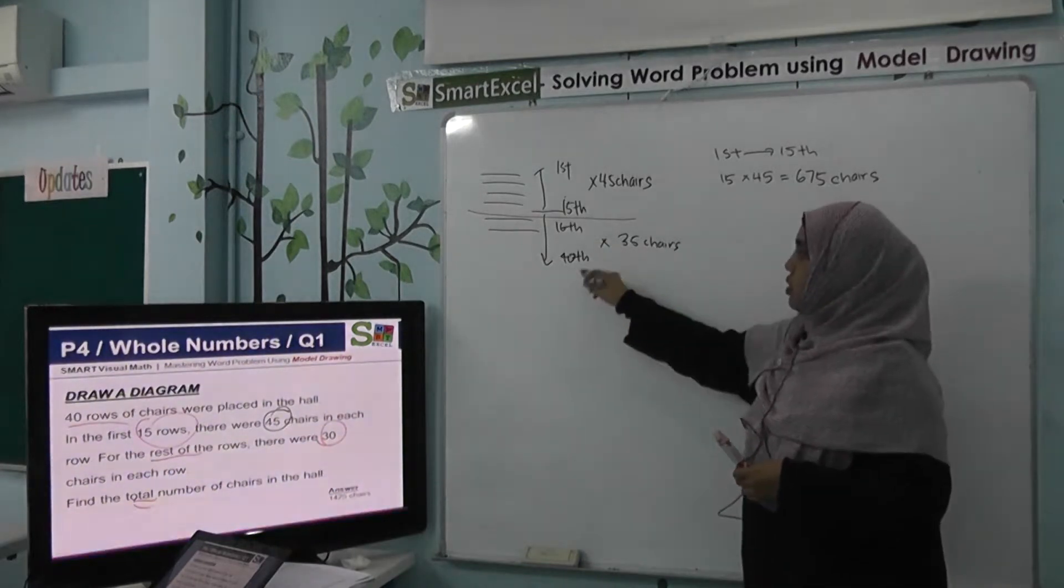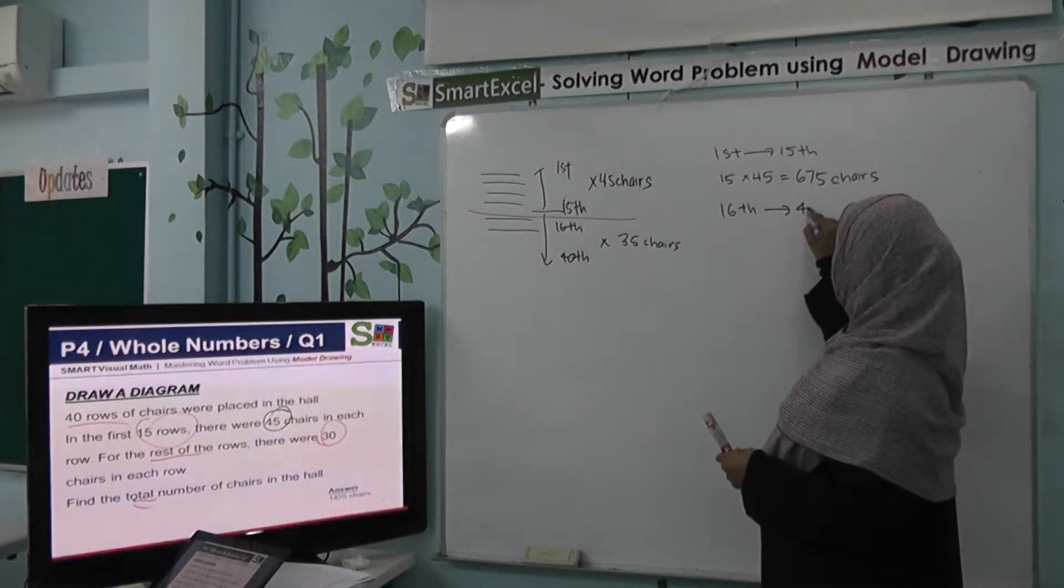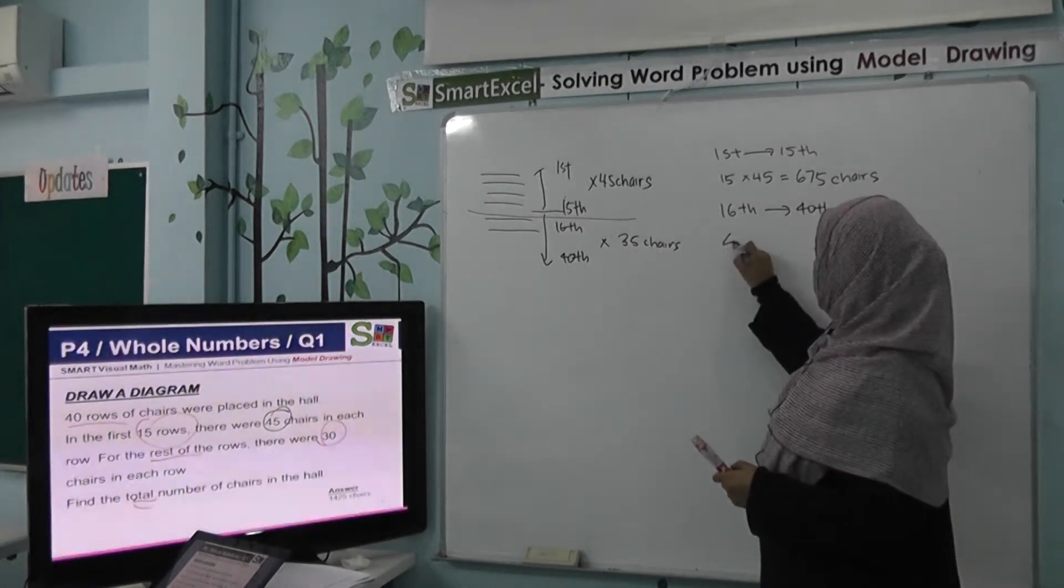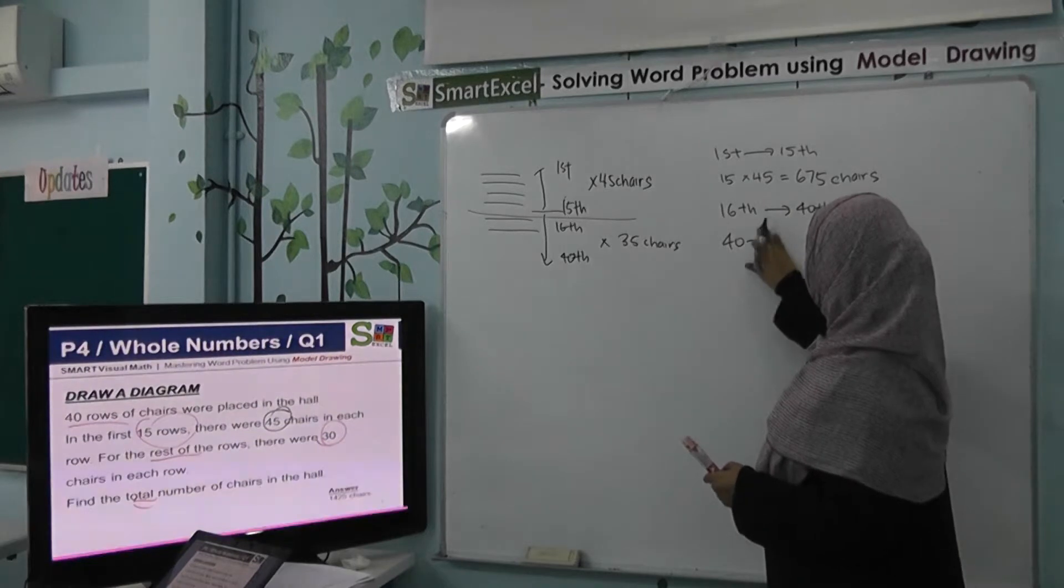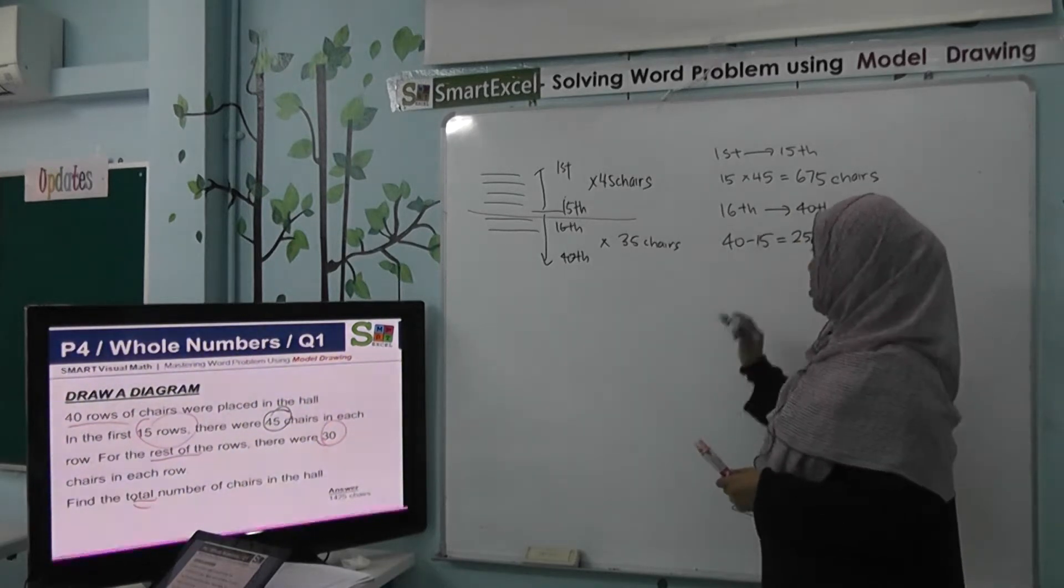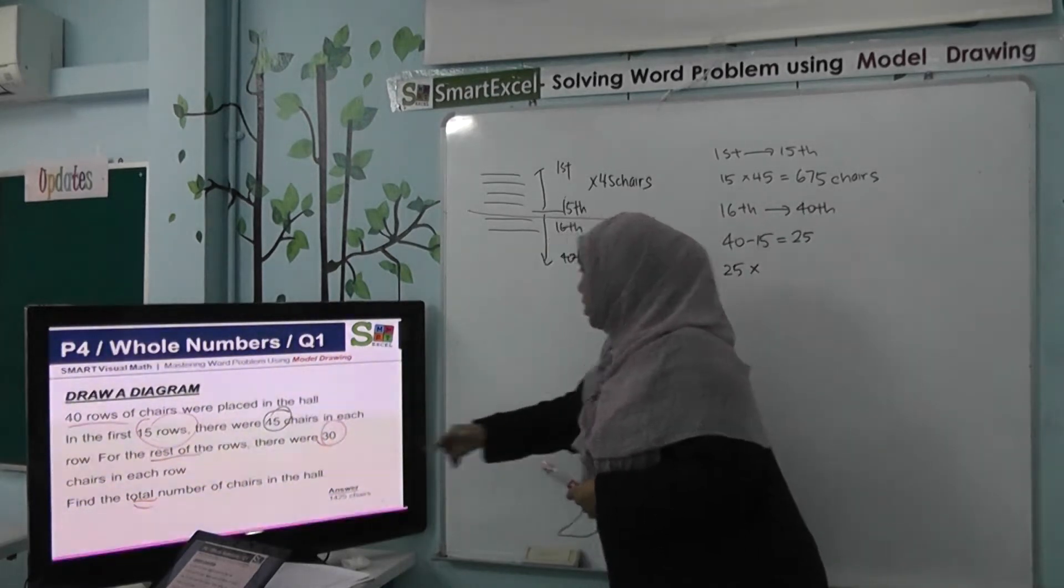Then, after which from your 16 to your 40 row, we can just take our 40, we minus the 15. This will give us 25 rows. 25 rows, we multiply by the 30 chairs.